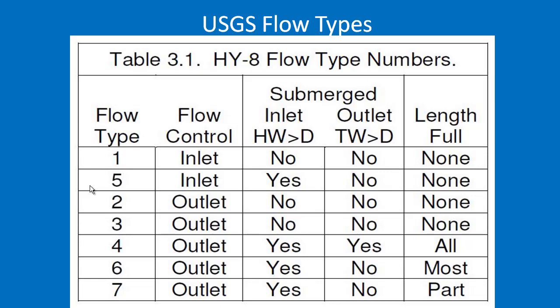Flow types 2, 3, 4, 6, and 7 are for outlet control, which is more complicated because it covers scenarios where the culvert barrel controls capacity or where the tailwater elevation controls capacity. The variables include whether the inlet is submerged, whether the outlet is submerged, and how much of the pipe runs full — none, most, or part. Flow types 6 and 7 are basically the same, differing only in whether the pipe is mostly full or partly full. There is much more variation in outlet control flow types.